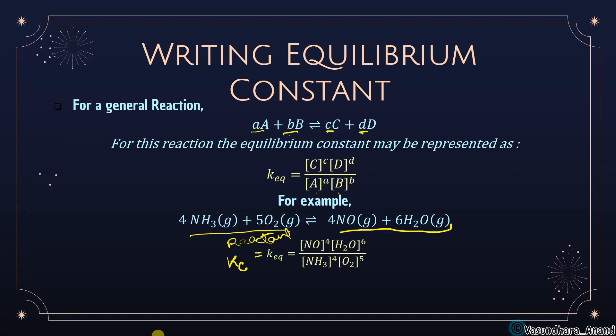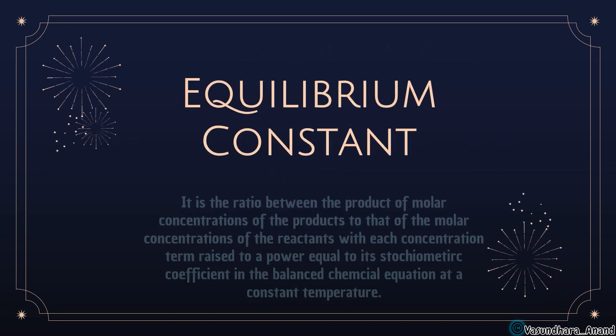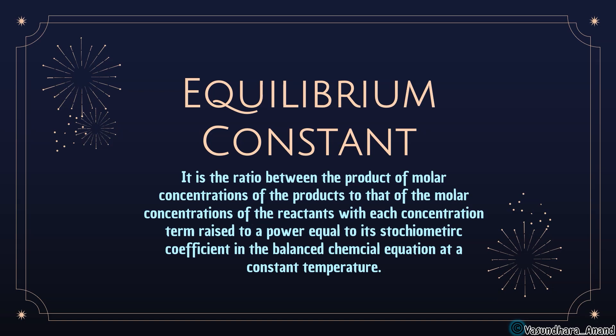The equilibrium constant Kc is defined as the ratio of the product of molar concentrations of products to the molar concentrations of reactants, with each concentration term raised to the power equal to its stoichiometric coefficient in the balanced chemical equation, at constant temperature. The definition may not be asked directly, but writing Kc for a given equation — where stoichiometric coefficients become powers — is very important.